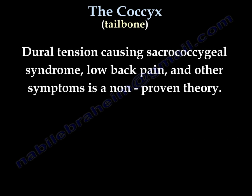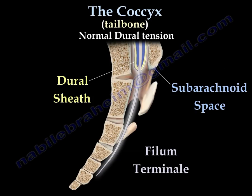The dural tension causing sacro-coccygeal syndrome — including low back pain and other symptoms — is an unproven theory, but I will try to explain it. You can see the dural sheath or tube, and here you see the filum terminale. Normal dural tension occurs because the filum terminale is connected to the dural tube, and there is smooth movement of the dural tube as the coccyx moves normally.